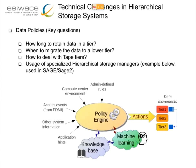When you have hierarchical storage systems, the big question is: how long do you retain data in each tier? When do you migrate data to lower tiers? Tape is starting to be addressed now too — whether we need special policy engines or managers to deal with data movement. These are big open questions, but now with machine learning we can have much smarter policy engines to affect all these data movements.